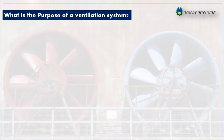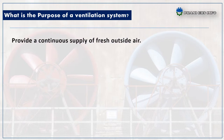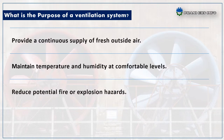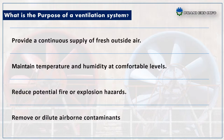Next, what is the purpose of a ventilation system? The main purpose of a ventilation system is to provide a continuous supply of fresh outside air, maintain temperature and humidity at comfortable levels, reduce potential fire and explosion hazards, and remove or dilute airborne contaminants.